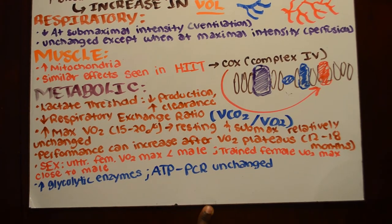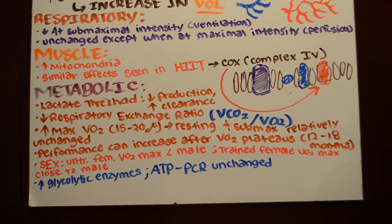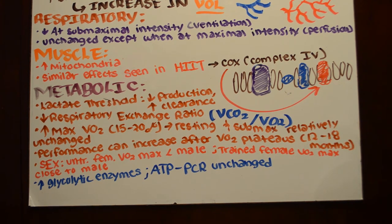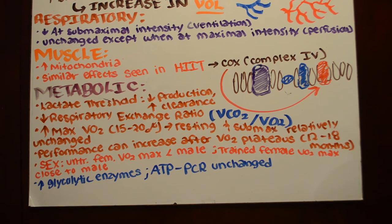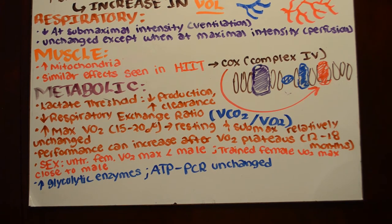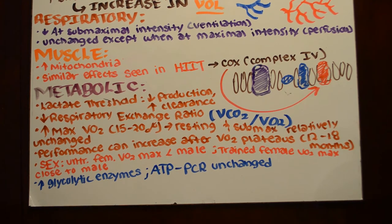Performance can increase even after VO₂ plateaus, which can be confusing. What you really need to understand is that your performance can be greatly increased even if your VO₂ has reached its maximum. For example, if you already have a VO₂ max and you start training uphill for the first time, over time you'll be able to move up that hill more quickly and efficiently — without changing your VO₂ max — because you've already been training for 12 to 18 months and have reached that ceiling.